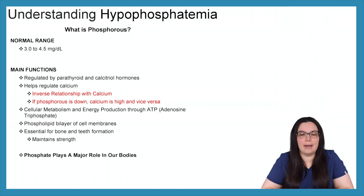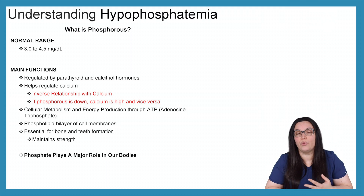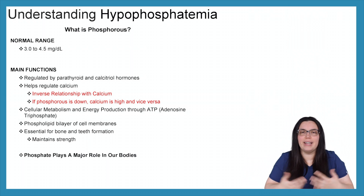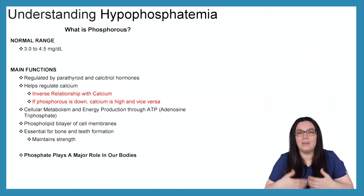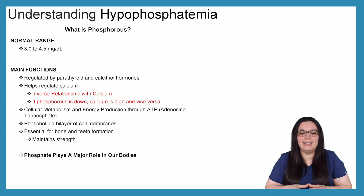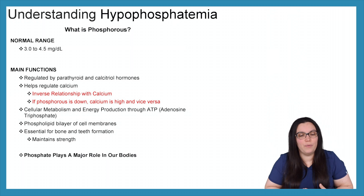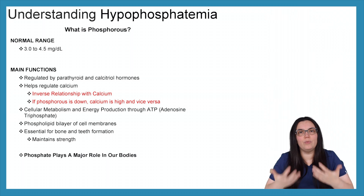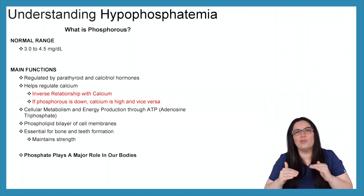Phosphorus also helps with cellular metabolism as well as energy production through ATP — adenosine triphosphate. It's in the name, so we need phosphorus to help with cellular metabolism and energy production. Phospholipid bilayers in our cell membrane — phospholipid, phosphorus — we need phosphorus in order to maintain those cell membranes. And lastly, it's essential for bone and teeth formation, helping maintain the strength in our bones and teeth. Phosphate plays a major role in our bodies.